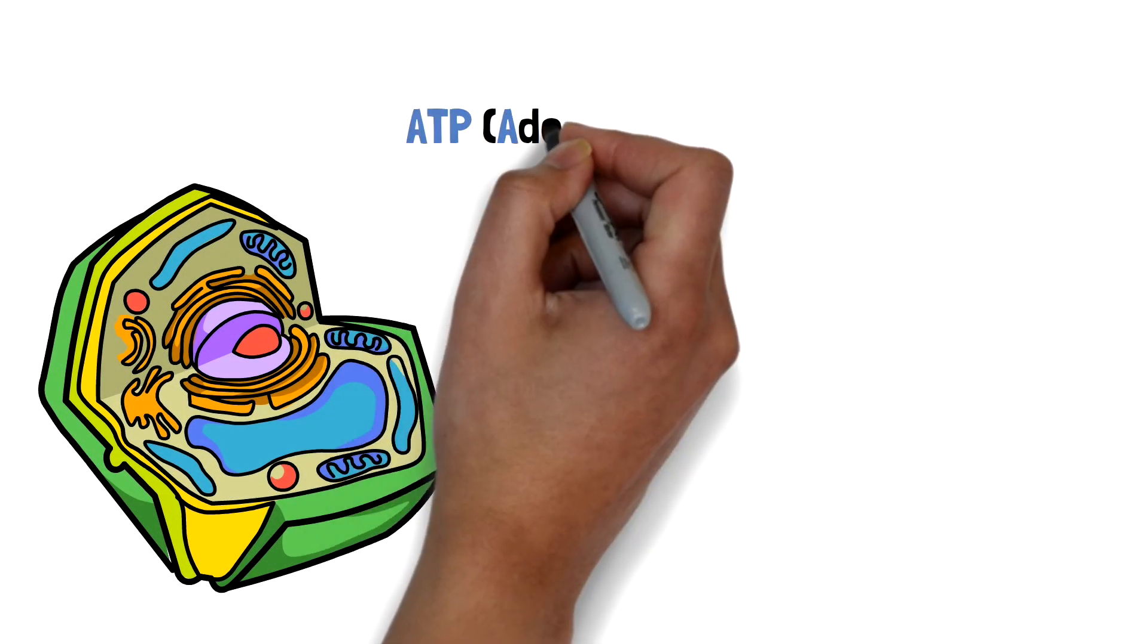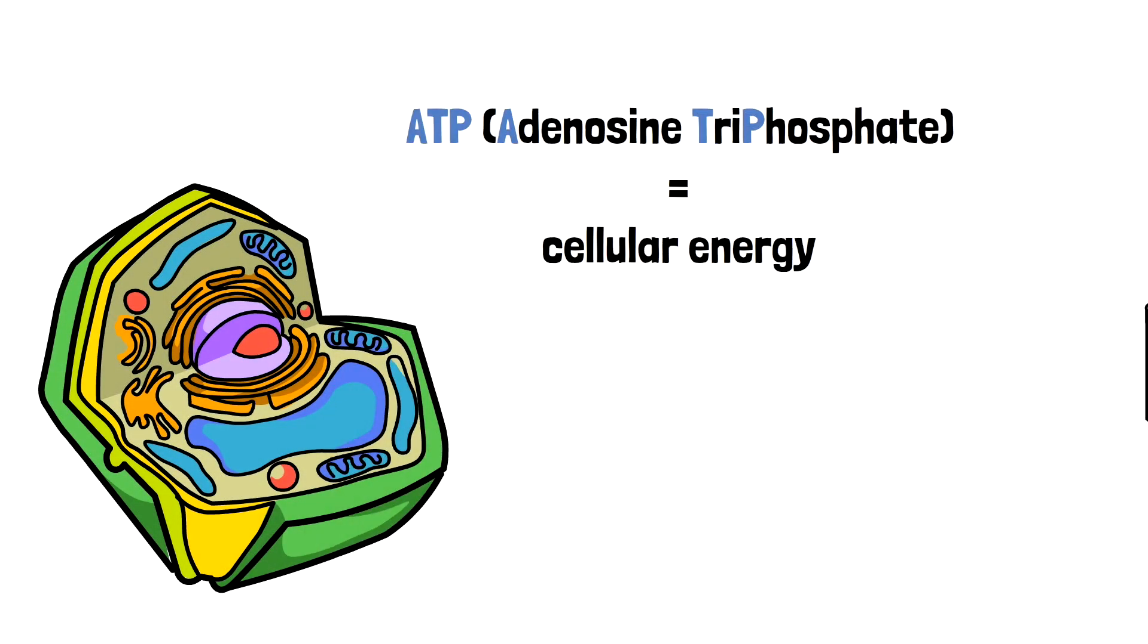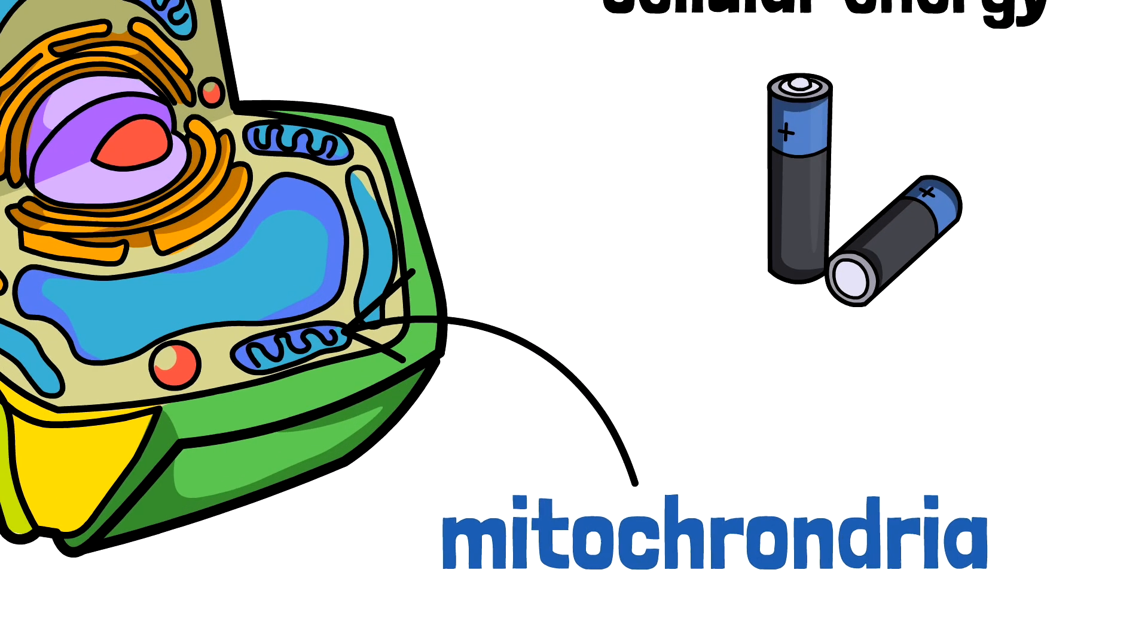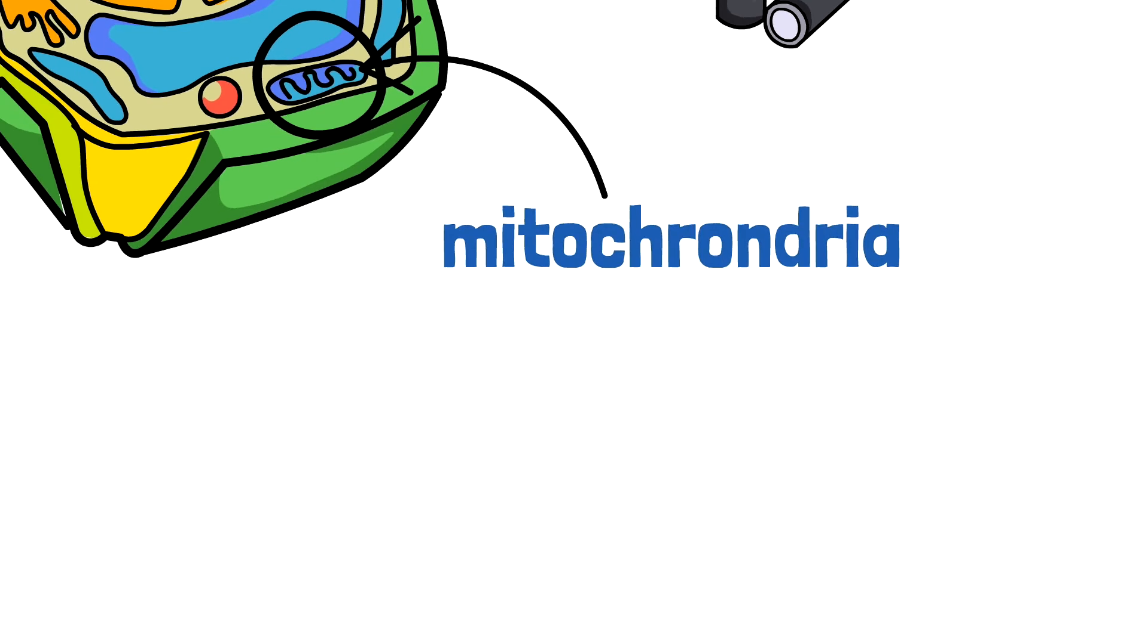Cells need ATP or energy to function and survive. ATP is made in specialized parts of the cell called mitochondria in a process known as the electron transport chain.